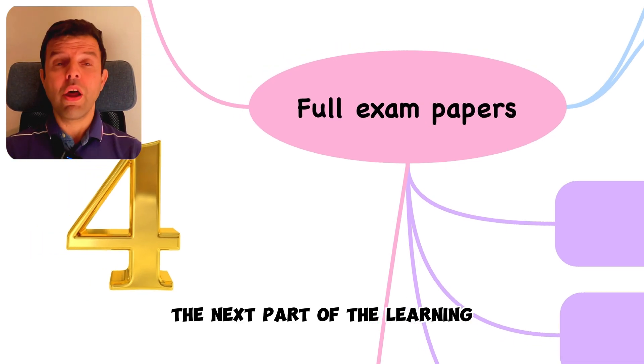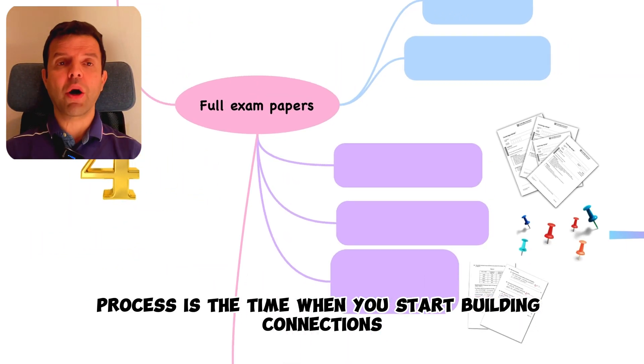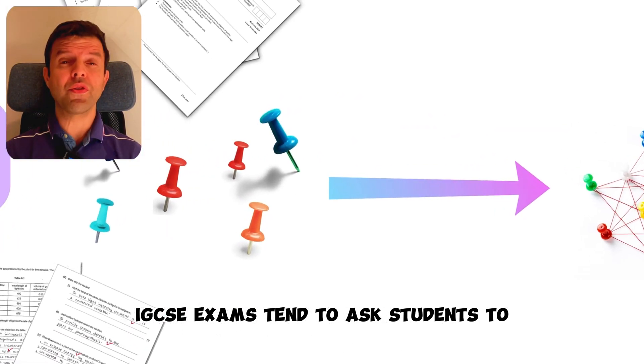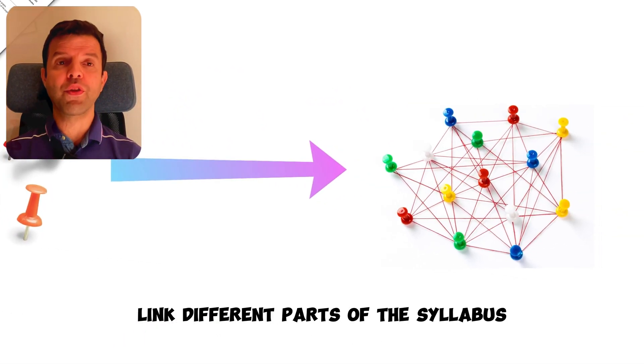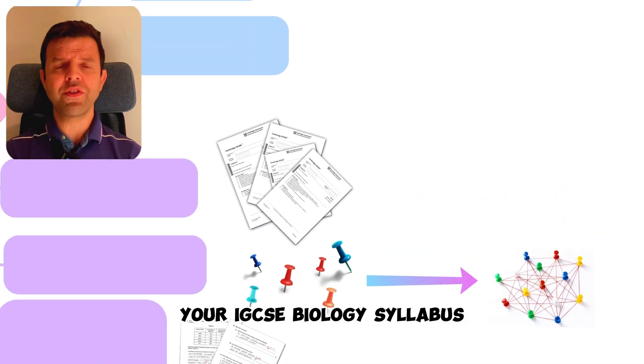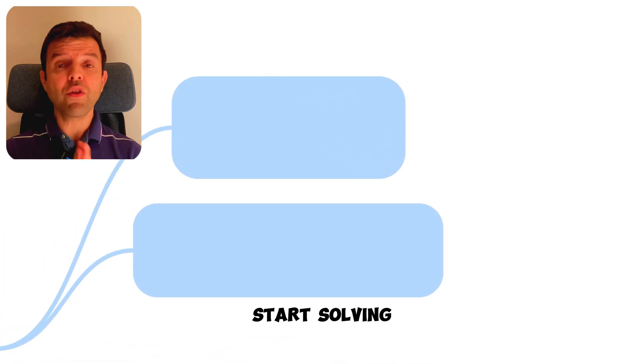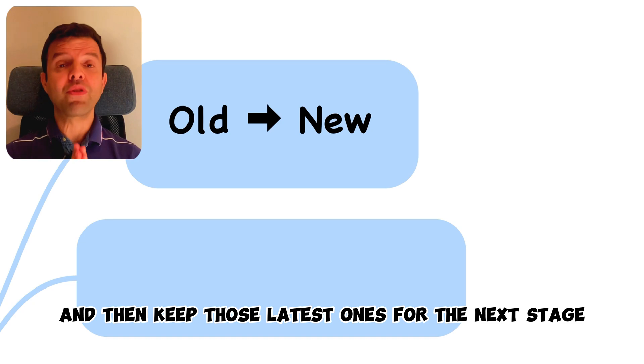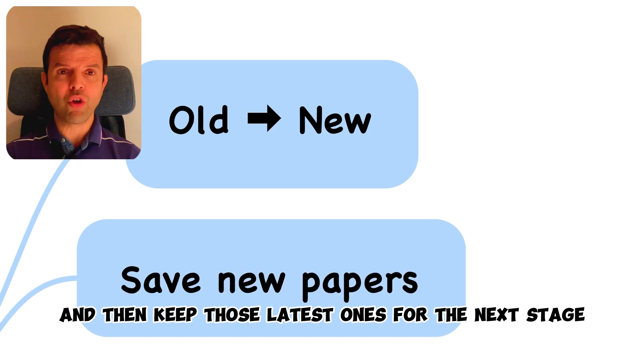The next part of the learning process is the time when you start building connections. IGCSE exams tend to ask students to link different parts of the syllabus. So once you're fully done with the content of your IGCSE biology syllabus, start solving full exam papers. Do the old ones first, and then keep those latest ones for the next stage.